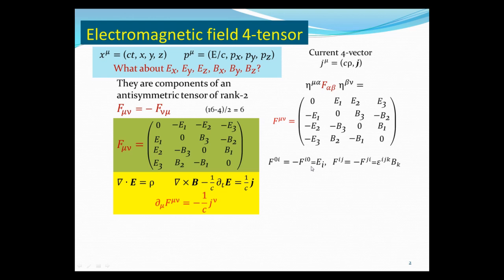F^0i equals minus F^i0, and F^0i is simply the electric field component E_i. F_ij can be written in terms of the Levi-Civita symbol: for example, F_12 equals epsilon_12k summed over k — since all other terms vanish only k=3 survives, giving the magnetic field component B_3.